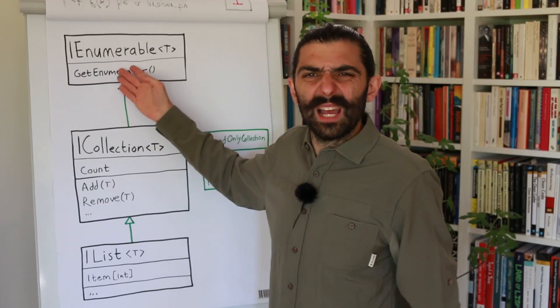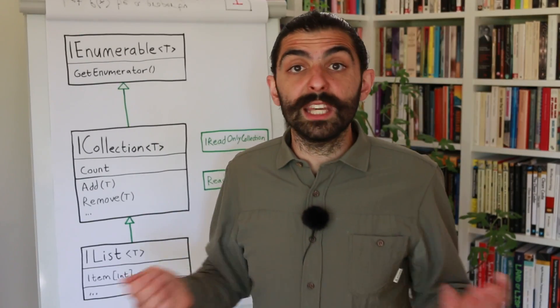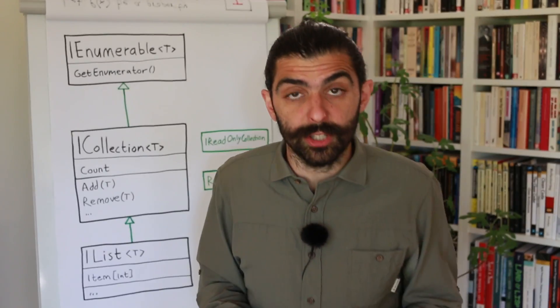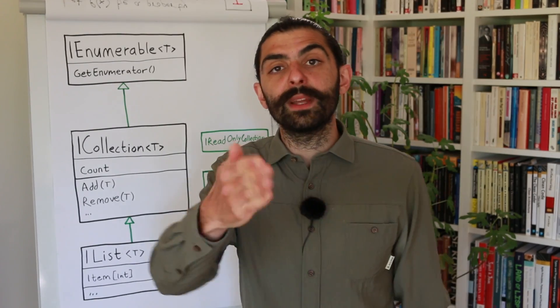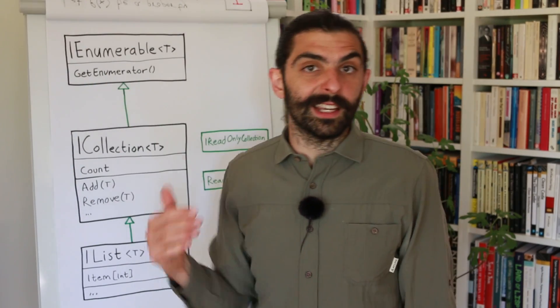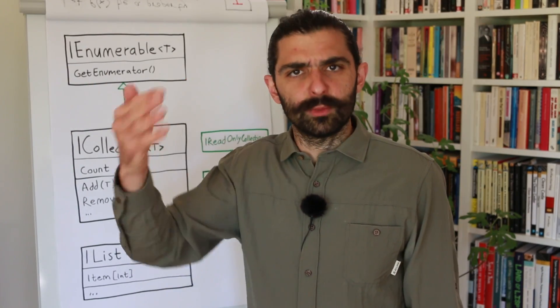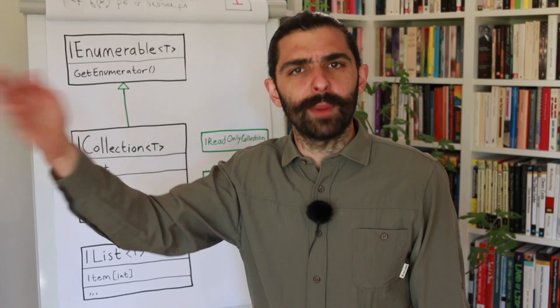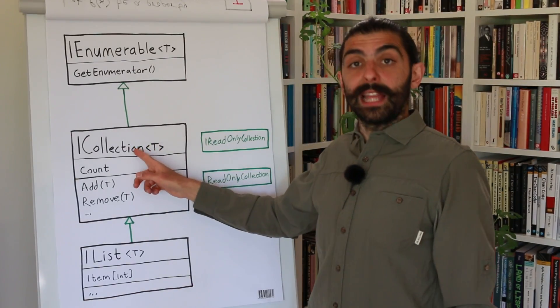What is an example of an infinite enumerable? Think about the sequence of integers starting from zero, incrementing by one into infinity — you just go upwards one by one. What about ICollection?